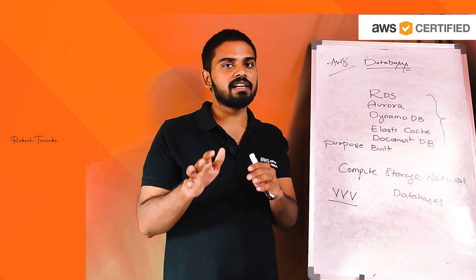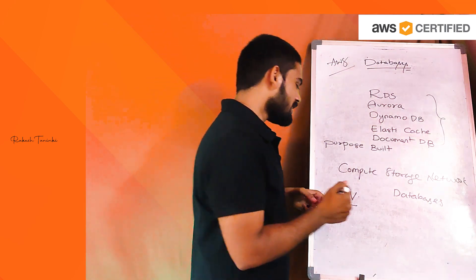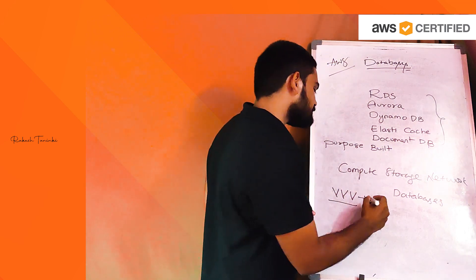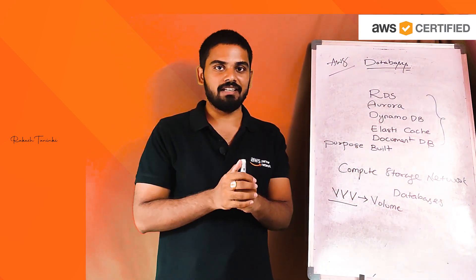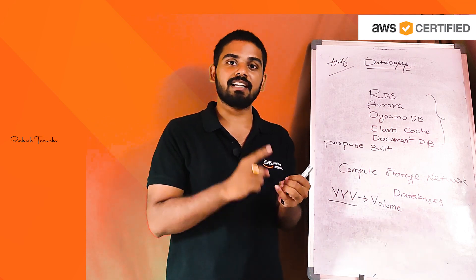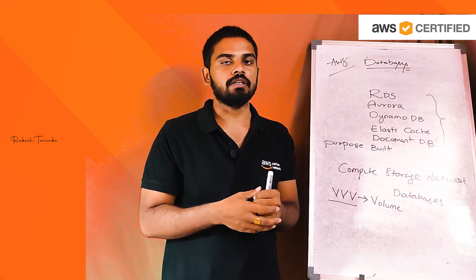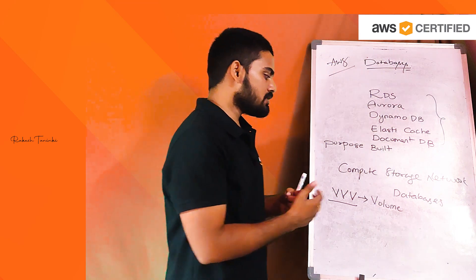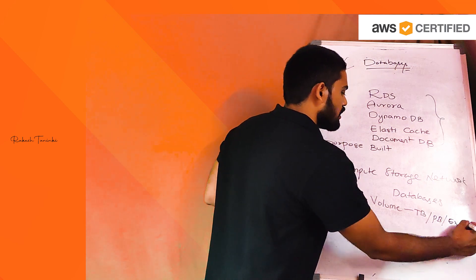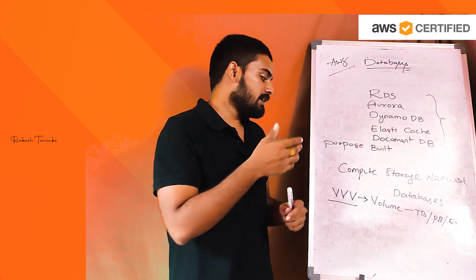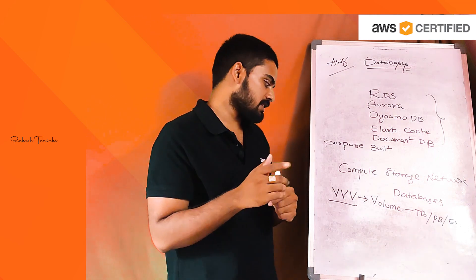We will discuss databases based on three V's. The first V is Volume — meaning the size of data our database needs to support: gigabytes, terabytes, and petabytes. Based on the volume requirement, we choose the appropriate database.